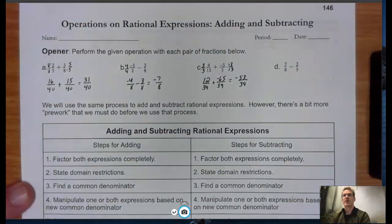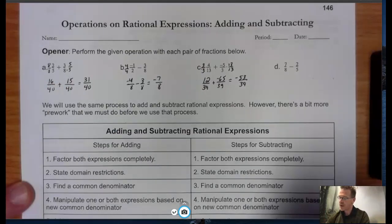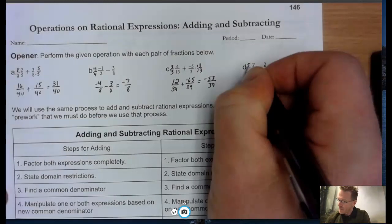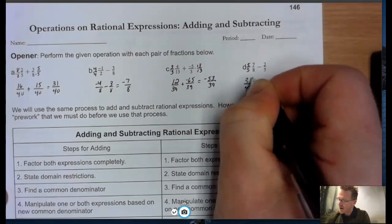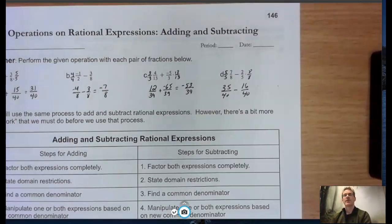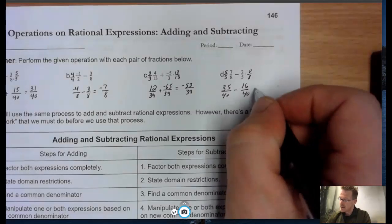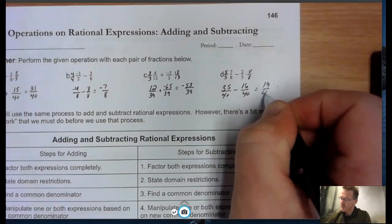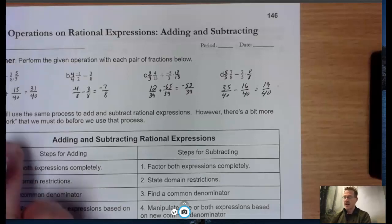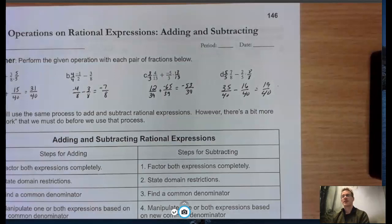Finally, part D: 7/8 minus 2/5. Since we already know from part A that the LCD for 8 and 5 is 40, I multiply by 5/5 to get 35 over 40, and multiply by 8/8 to get 16 over 40. Then 35 minus 16 is 19 over 40. If we had a common factor in the numerator and denominator we'd reduce, but in this case we don't for any of the four problems.